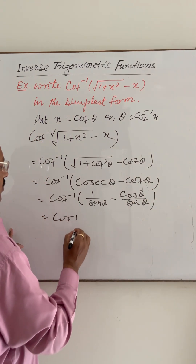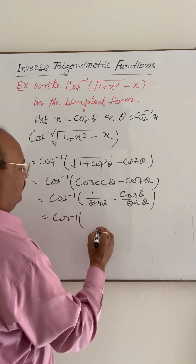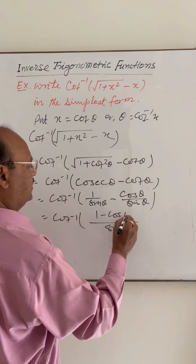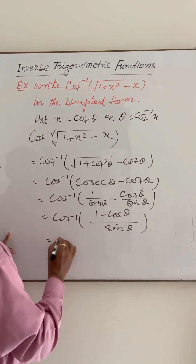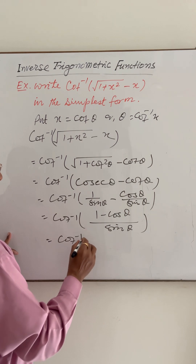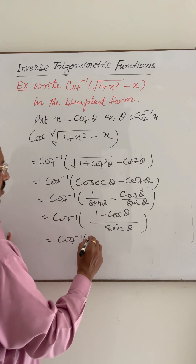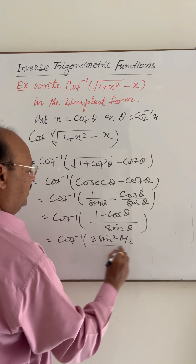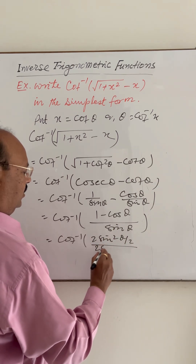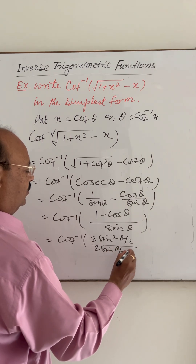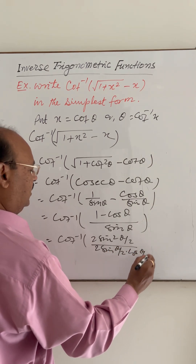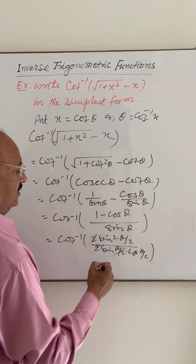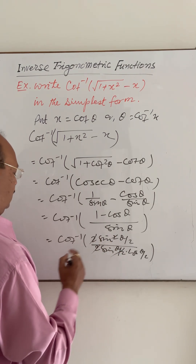Taking LCM as sin theta, the numerator is 1 minus cos theta. Applying the half-angle formula, 1 minus cos theta equals 2 sin squared(theta by 2), and sin theta equals 2 sin(theta by 2) times cos(theta by 2). The factor of 2 cancels, and sin(theta by 2) cancels with one factor in the numerator.